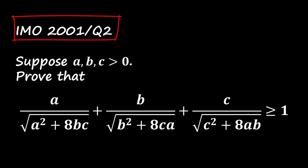Here's the problem. Let A, B, and C be positive numbers. We need to prove the following inequality: A divided by the square root of A squared plus 8 times B times C plus B divided by the square root of B squared plus 8 times C times A plus C divided by the square root of C squared plus 8 times A times B is greater than or equal to 1.